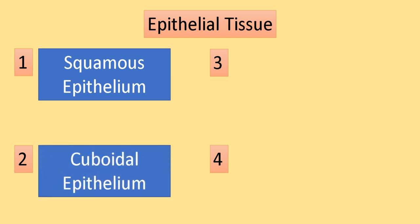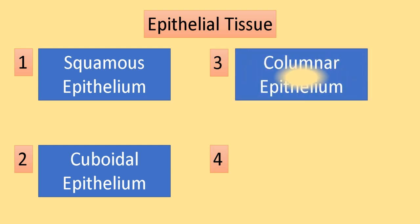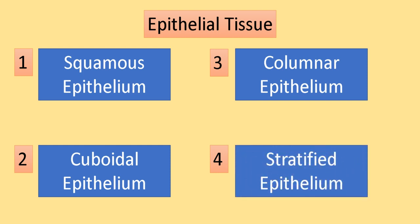The second subtype is cuboidal epithelial tissue, found mainly in the salivary glands, pancreatic duct, and nephrons. The third type is columnar epithelium, located in the windpipe and glands. The fourth type is stratified epithelium, which is mainly found in the skin and in the cornea of the eye.